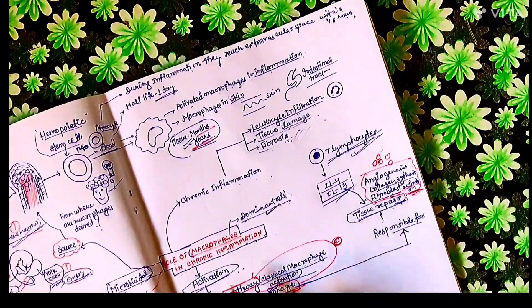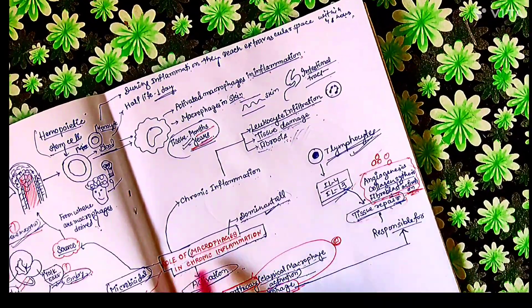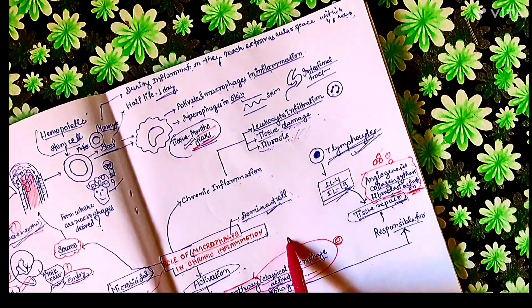That's all about the role of macrophages in chronic inflammation. Next, we will discuss about the role of lymphocytes in chronic inflammation. Thank you.